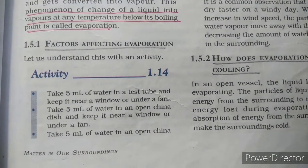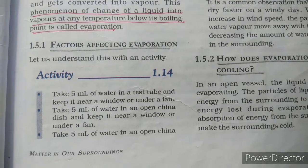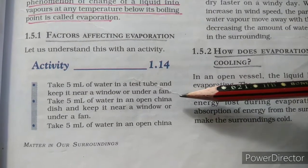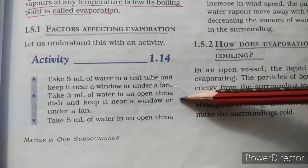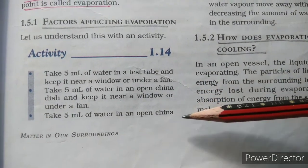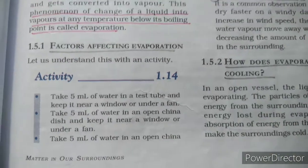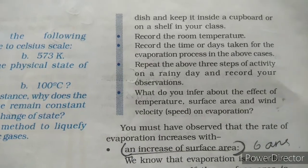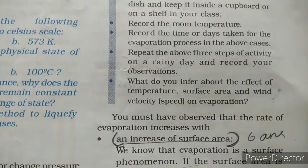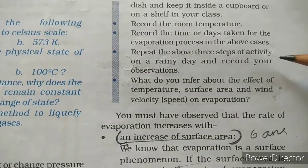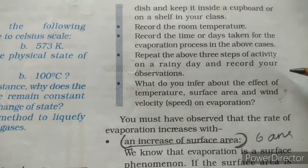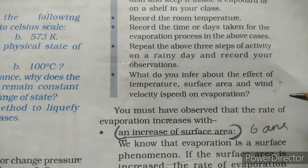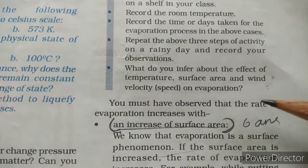Factors affecting evaporation: Take 5 ml of water in a test tube near a window or under a fan. Take 5 ml of water in an open china dish near a window or under a fan. Take 5 ml of water in an open china dish inside a cupboard. Record room temperature and the time taken for evaporation in each case. Repeat on a rainy day. Observe the effect of temperature, surface area, and wind velocity on evaporation.